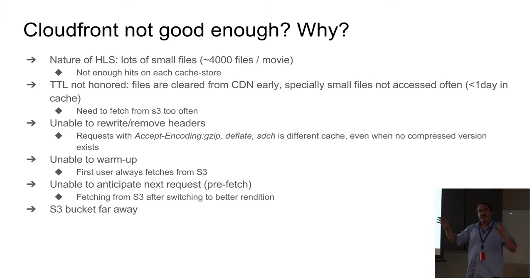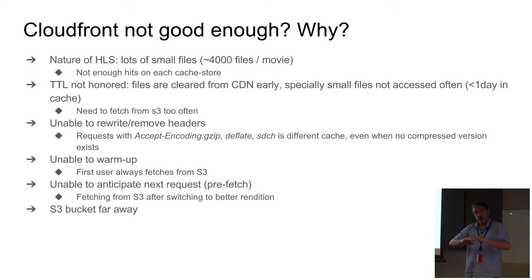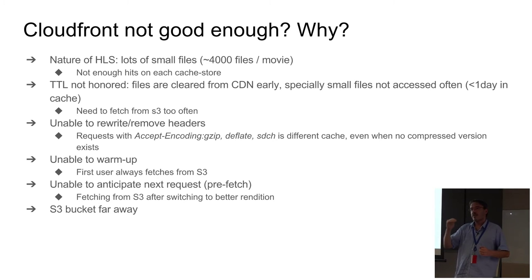Since your player is choosing the rendition to take, it downloads one segment and says 'I'm downloading this really fast, I can ramp up one better.' But as soon as it ramps up, that rendition is not in CloudFront, so it's very slow. The player then says 'I have a bad network,' goes down again — and the next lower rendition may not be in CloudFront either. You end up with really crappy video quality even if people tell support they have a 10 Mbps line. It's just how the player works — at every segment it looks at download speed and decides to go one higher or lower.